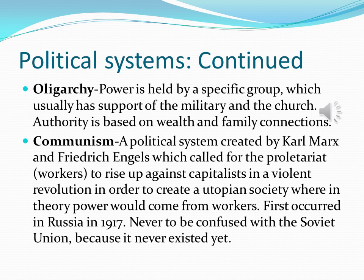Communism was a political system created in Germany in the 19th century by Karl Marx and Friedrich Engels, which called for proletariat workers to rise up against capitalists in a violent revolution in order to create a utopian society where, in theory, power would come from workers. In reality it never actually happened. But it first occurred in Russia in 1917. Never to be confused with the Soviet Union, because in 1917 the Soviet Union did not yet exist. It was Soviet Russia, which occurred after the revolution.